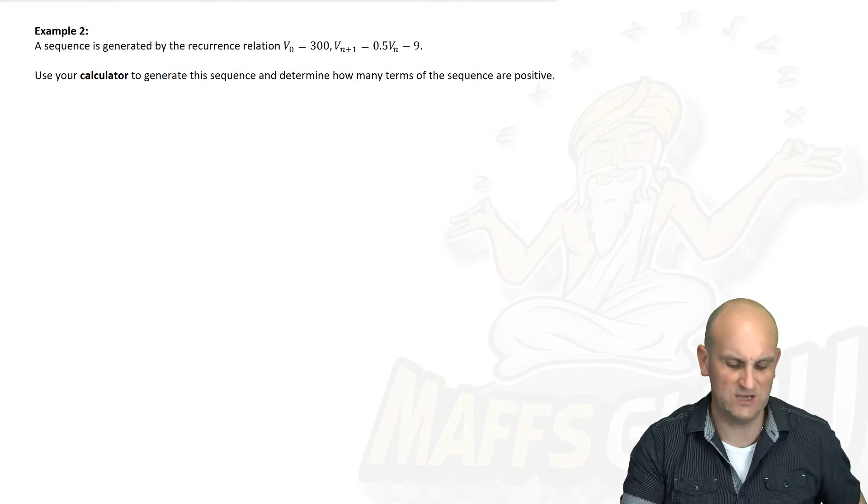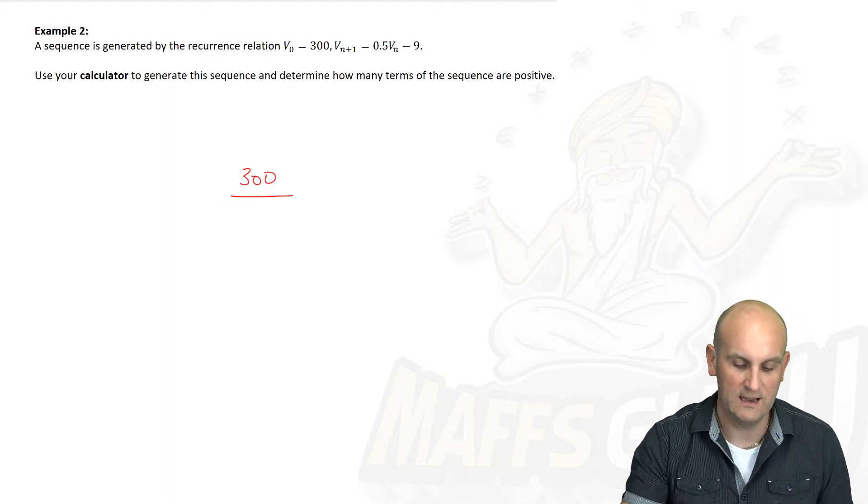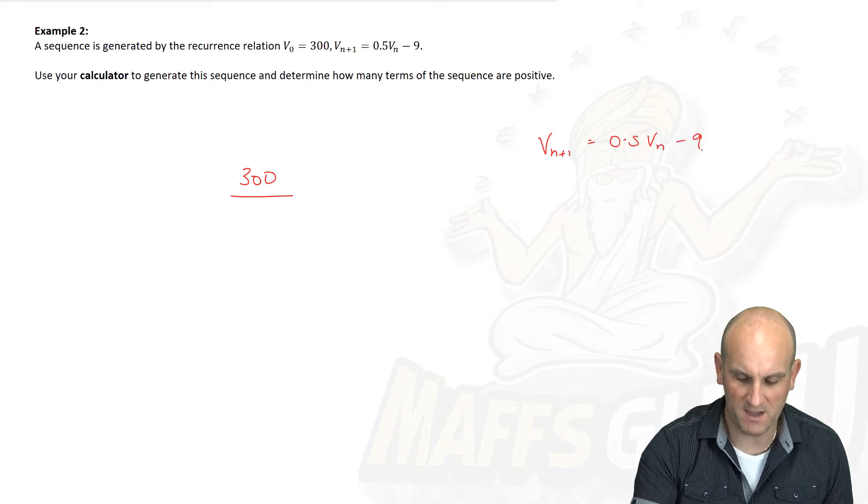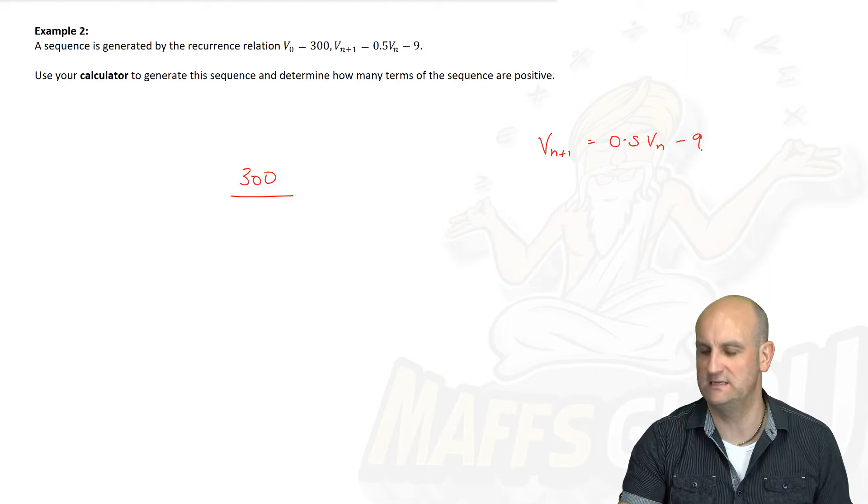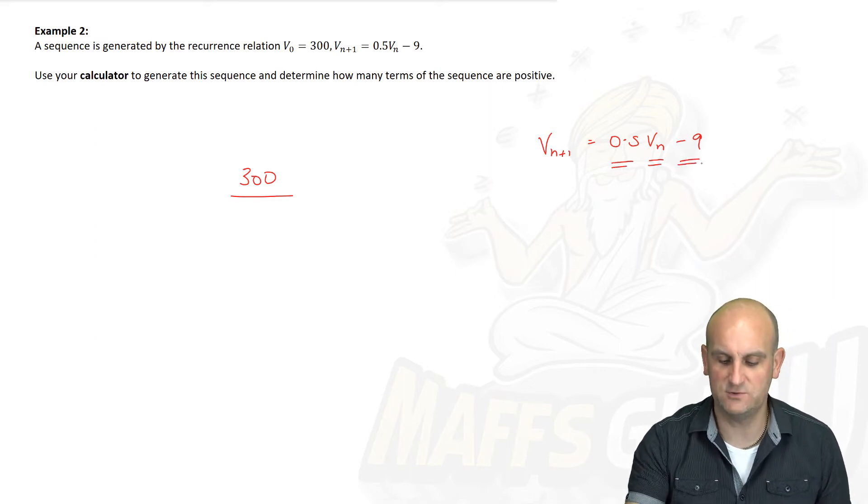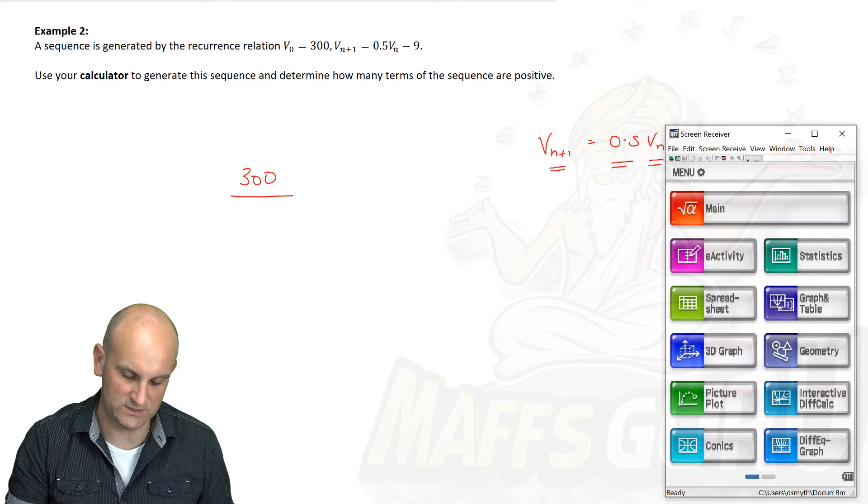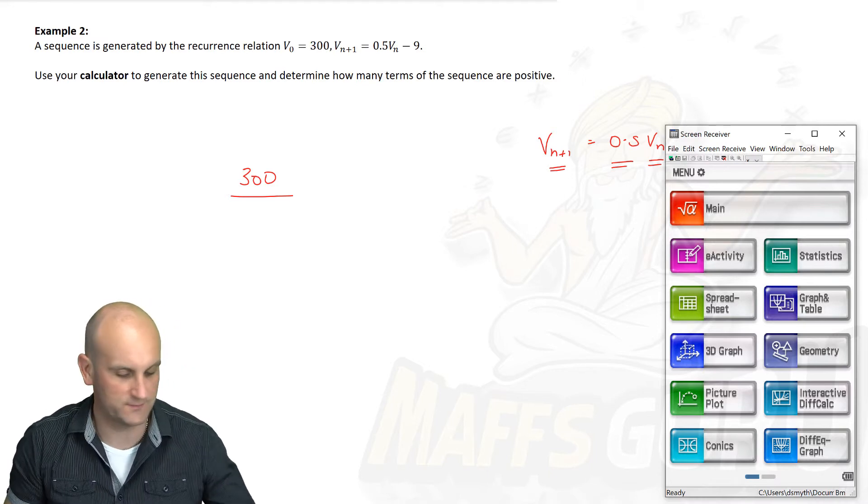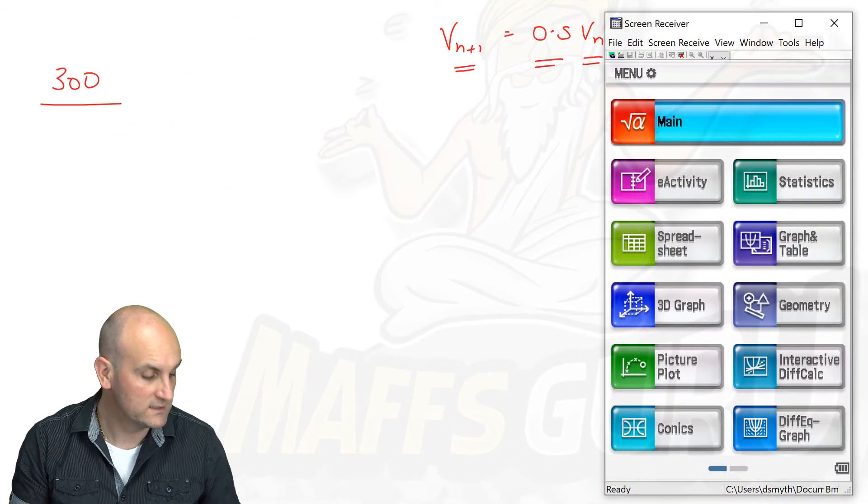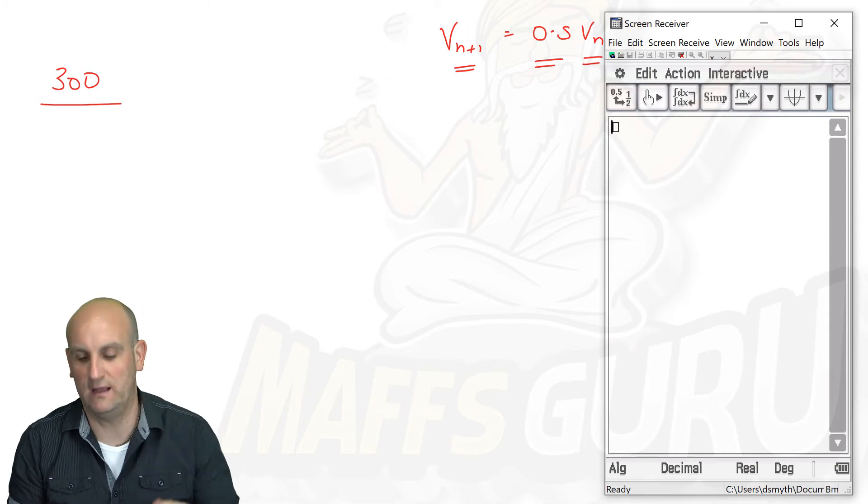Example number 2. A sequence is generated by the recurrence relation V0 equals 300. We know what that means now. Thank you very much. My first term is 300. And to get my next term, Vn plus 1 is equal to 0.5 Vn minus 9. Oh, hold on a moment. Ramping up the complexity just a little bit. Not really. This means take my current term, multiply it by a half, and then subtract 9 to get to my next term. Use your calculator. Oh, I can do this.